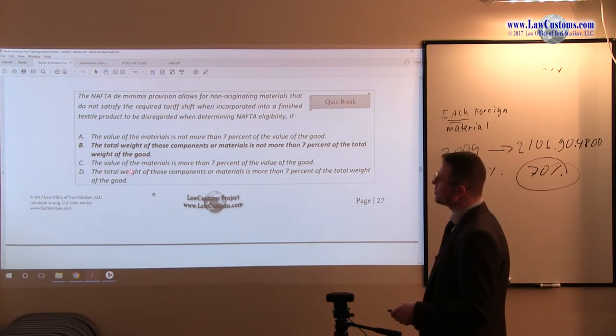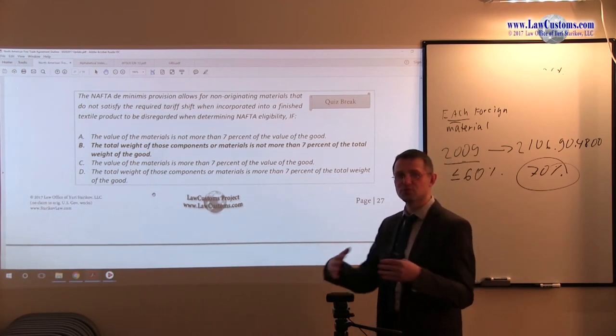C. The value of the materials is not more than 7% of the value of the good. Again we have value, value, 7% rule. Value and textile do not mix.